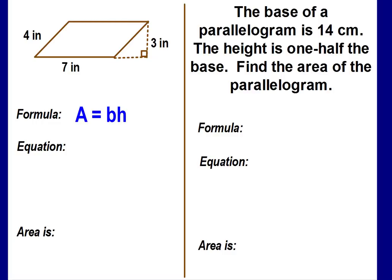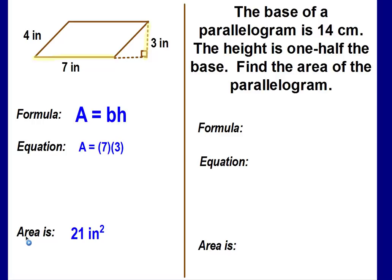The formula is area equals base times height. Our base is the flat bottom side. The height won't be the 4 because it's slanted. Sometimes the height is shown on the outside with dotted lines — if you extend the base, that side is perpendicular to it. There's that right angle, so this 3 is our height. Our equation is area equals 7 times 3, and the area is 21 inches squared.